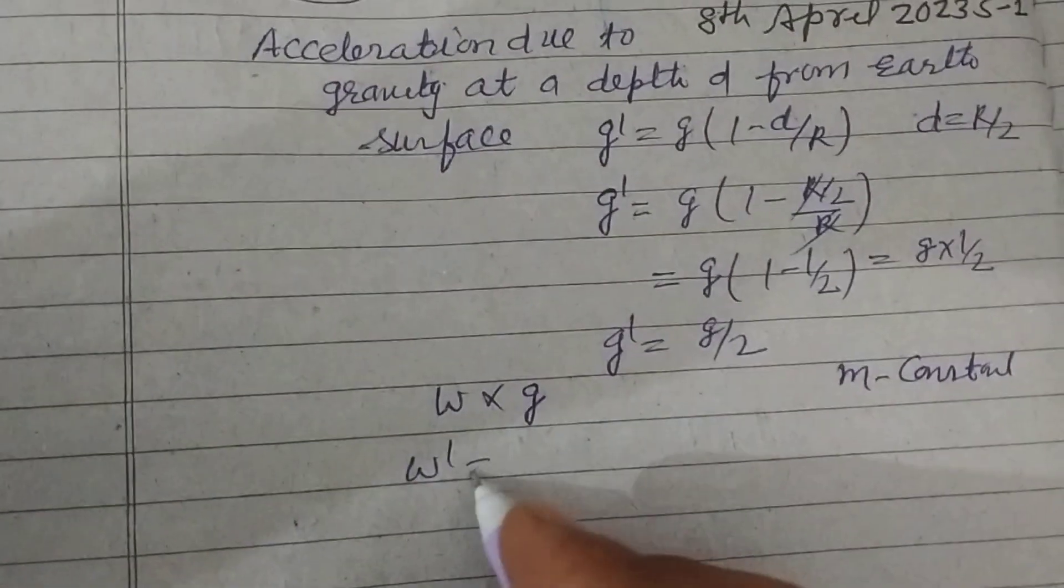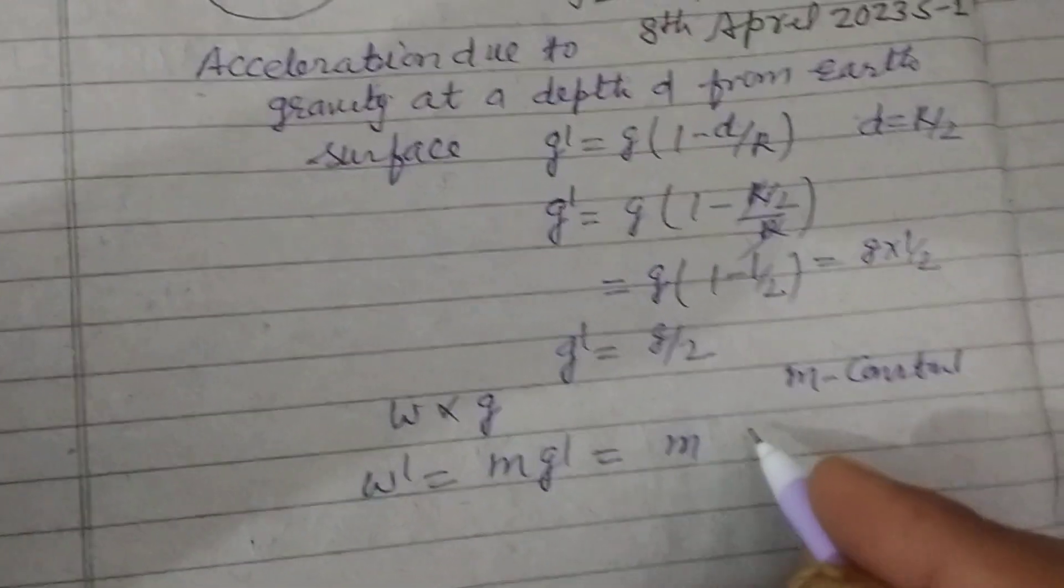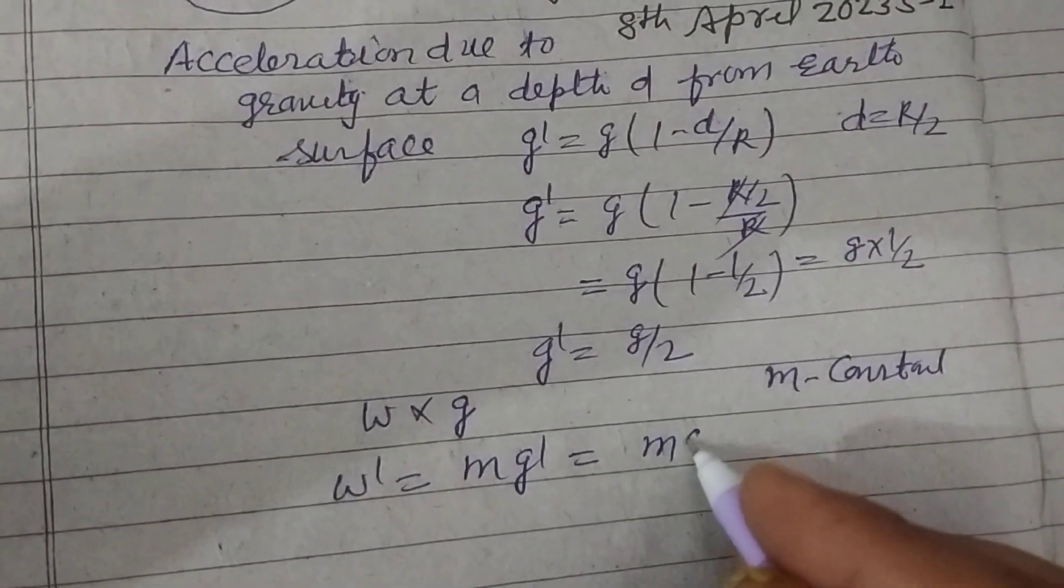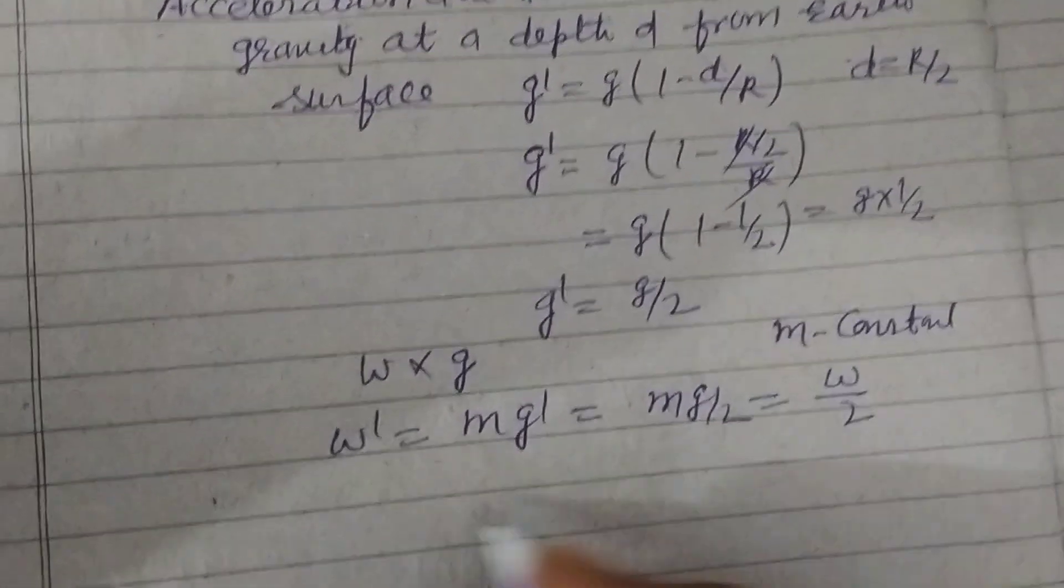So w dash equal to m g dash, so m times g by 2, and this is w by 2.